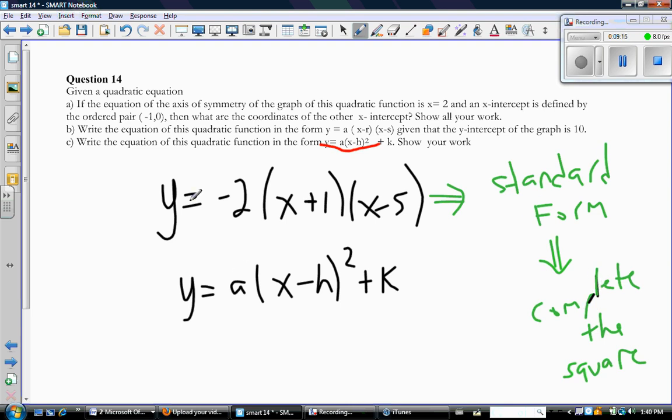Now, first of all, let's look at what we know. We know the value of a for this quadratic because a is the one thing that doesn't change between standard form, factored form, and vertex form. A is always, in this case, -2.